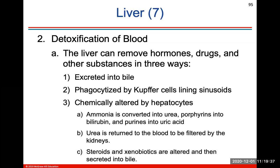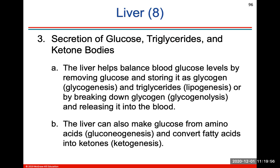The liver also removes hormones, drugs, and other substances by either excreting them into bile, phagocytizing them via Kupffer cells in the sinusoids, or chemically altering them by hepatocytes. The liver is also very important in helping balance blood glucose levels by removing glucose and storing it as glycogen and triglycerides, or by breaking down glycogen and releasing it back into the blood. The liver can also make glucose from amino acids and convert fatty acids into ketones.